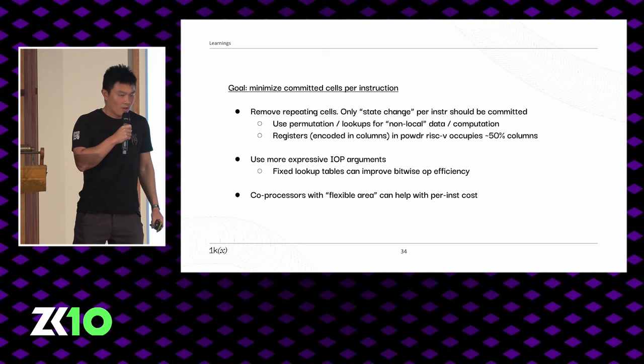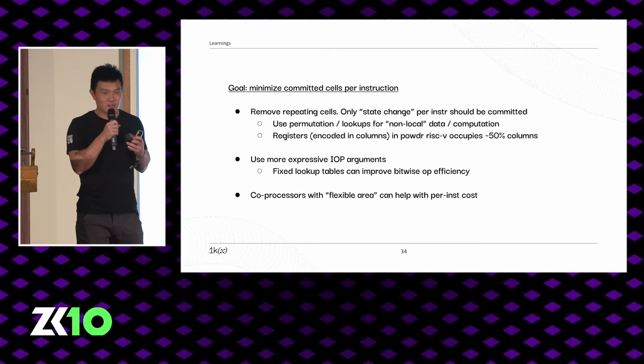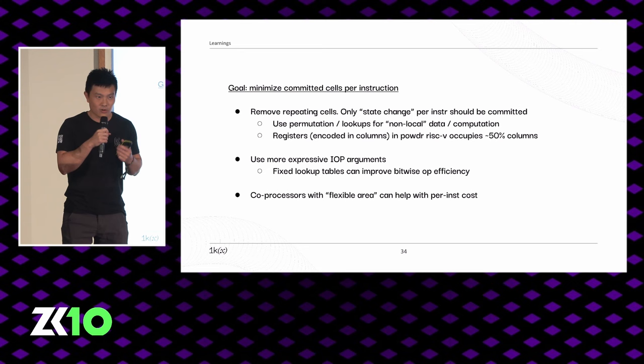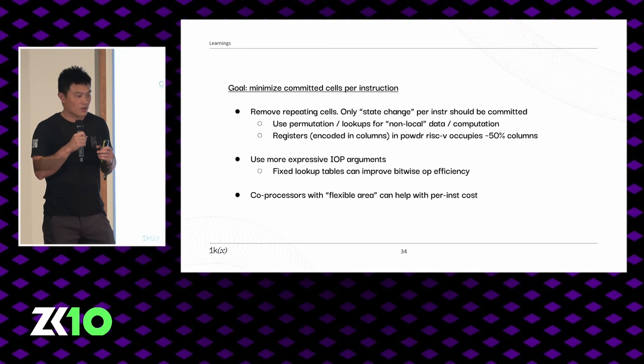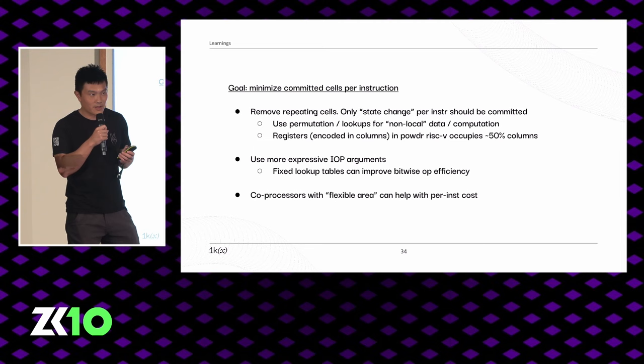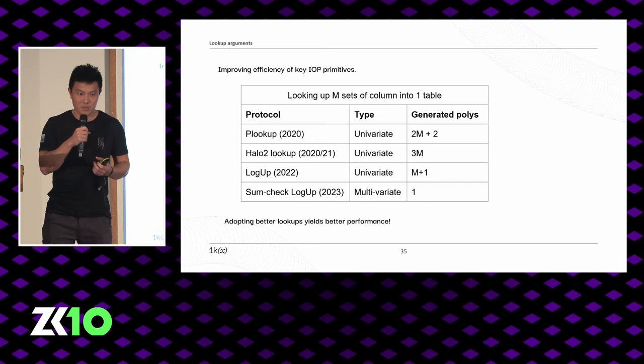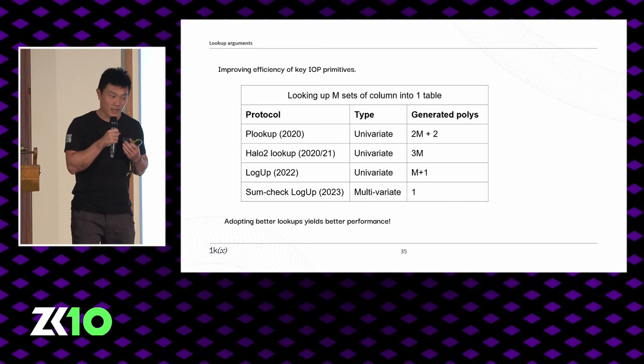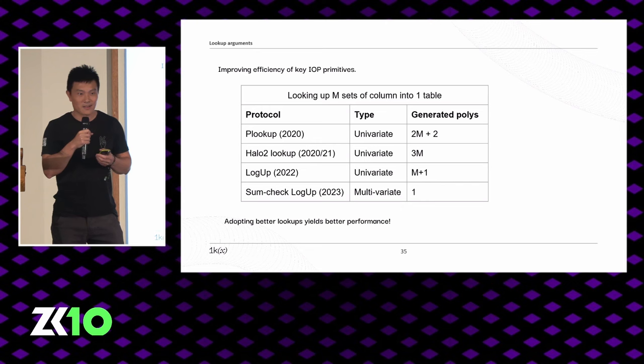To minimize bytes committed per instruction, we need to minimize cells committed per instruction. Certain cells like registers are repeated across cycles unnecessarily. Additionally, there are improvements in lookup protocols applicable to all VMs — for example, many Halo 2 VMs still use the original Halo 2 lookup arguments, which can be directly replaced by more recent and faster lookup arguments.